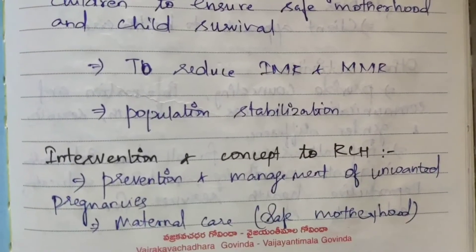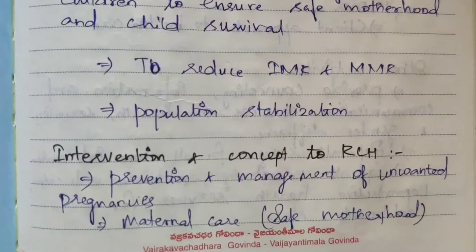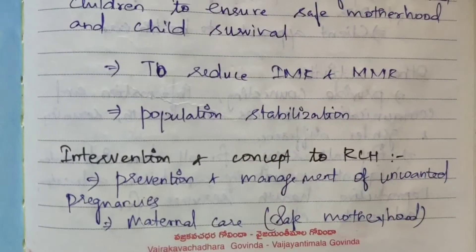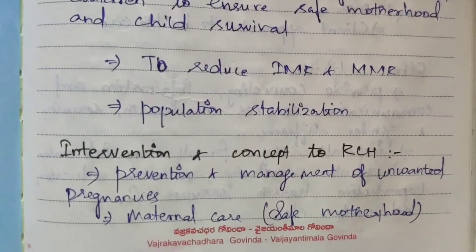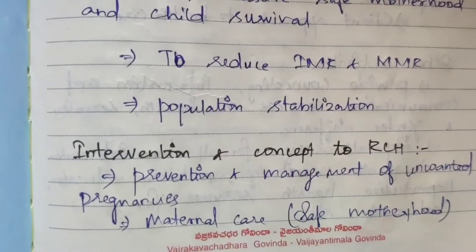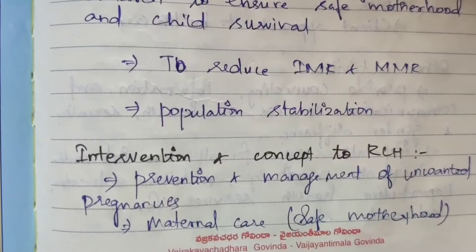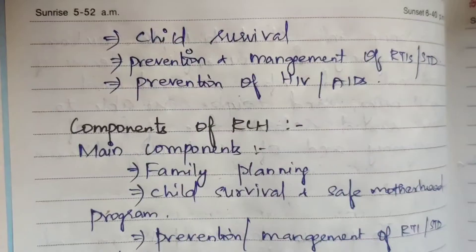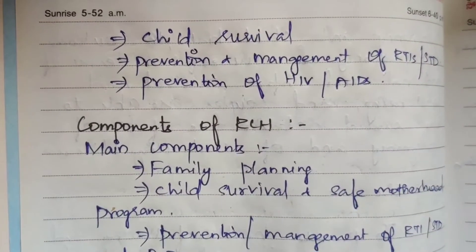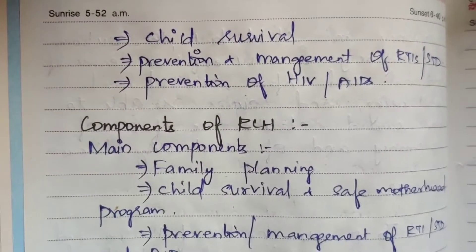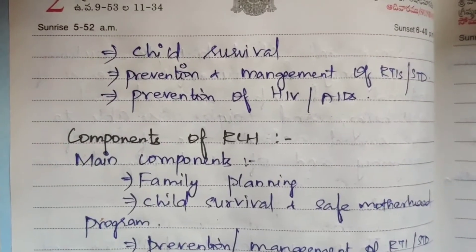The five key concepts and interventions of the RCH program are: prevention and management of unwanted pregnancy; safe motherhood — covering antenatal, intra-natal, and post-natal care; child survival; prevention and management of reproductive tract infections and sexually transmitted diseases; and prevention of HIV and AIDS.